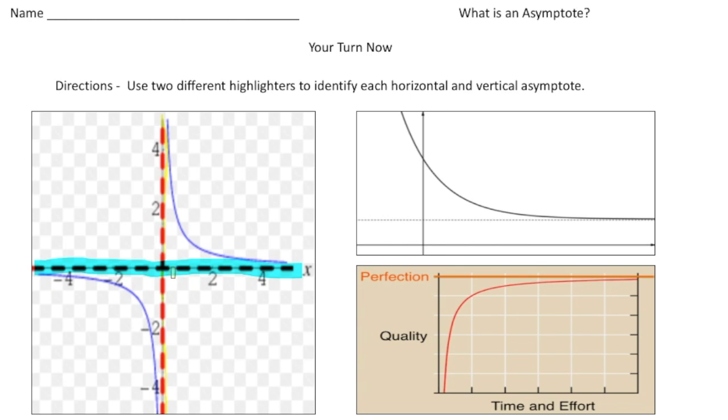These functions will approach those lines but they'll never actually get there. For the second one, we have another type of graph here. Let me take my blue highlighter. The horizontal asymptote is right here.